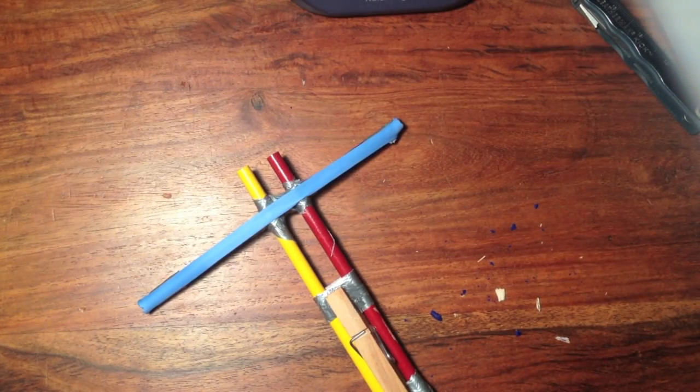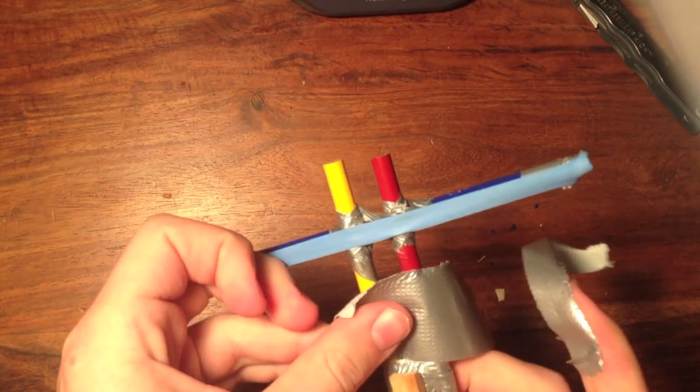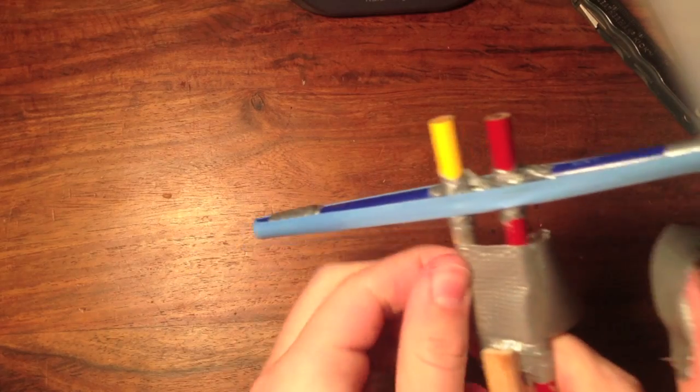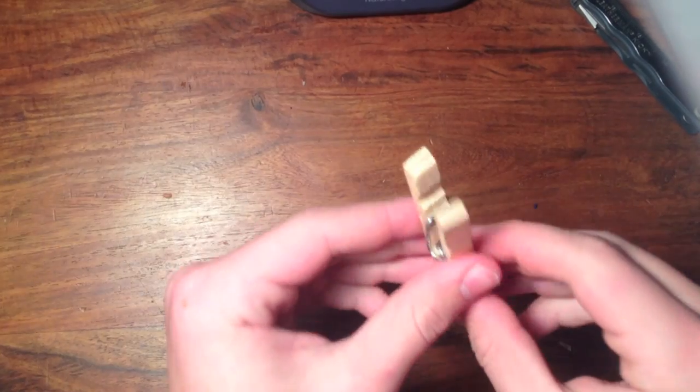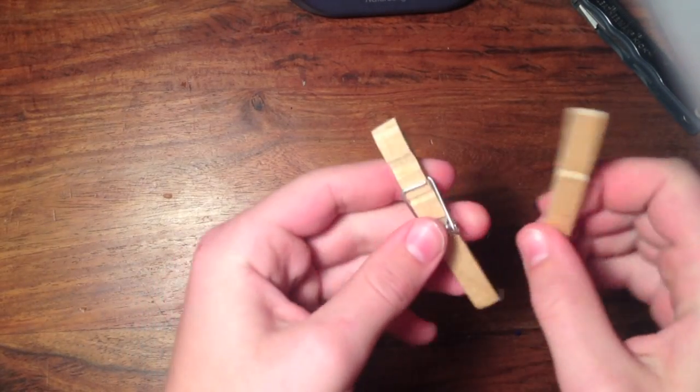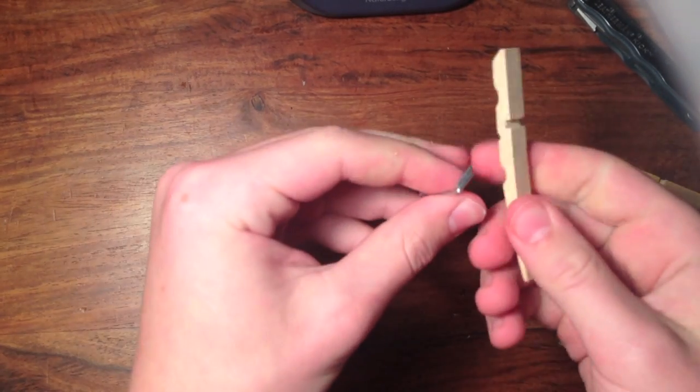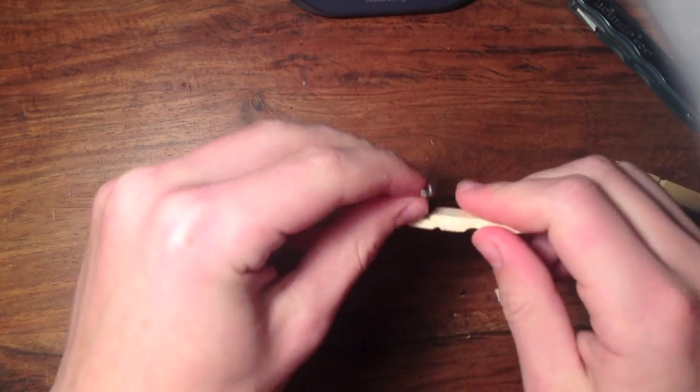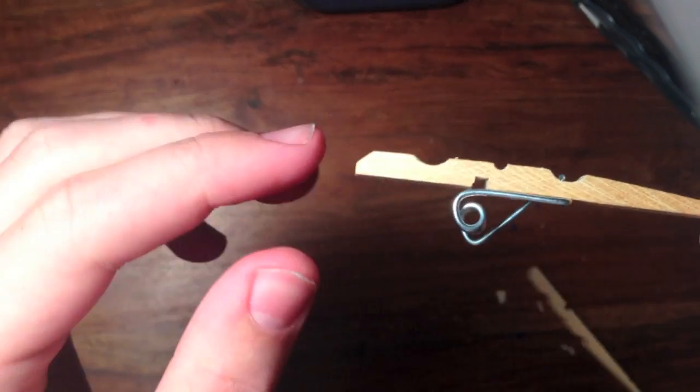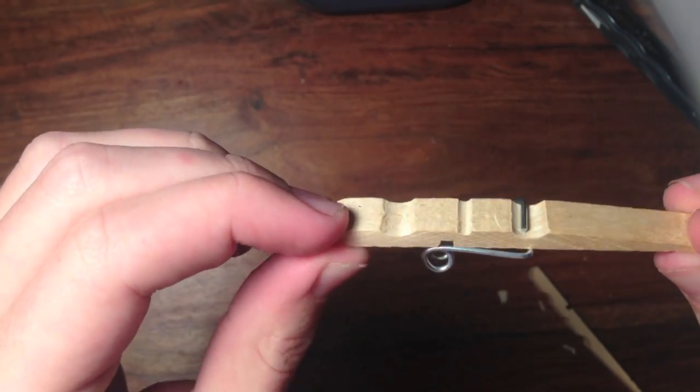Next, take a piece of duct tape and wrap it around the midpoint of the two pencils. Then take your clothespin, take it apart, and remove the metal spring. You're going to want to put it on the back, so it looks exactly like this.